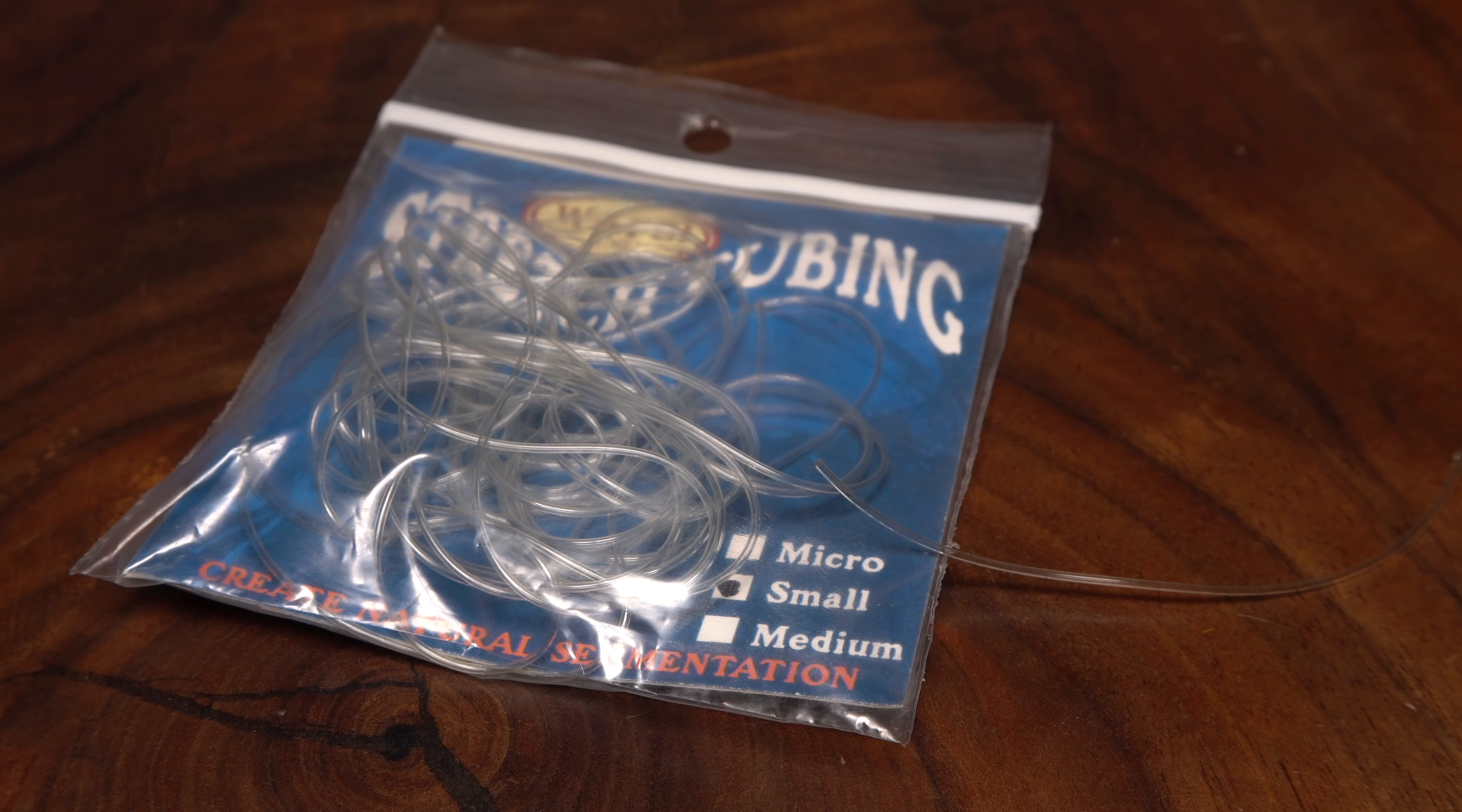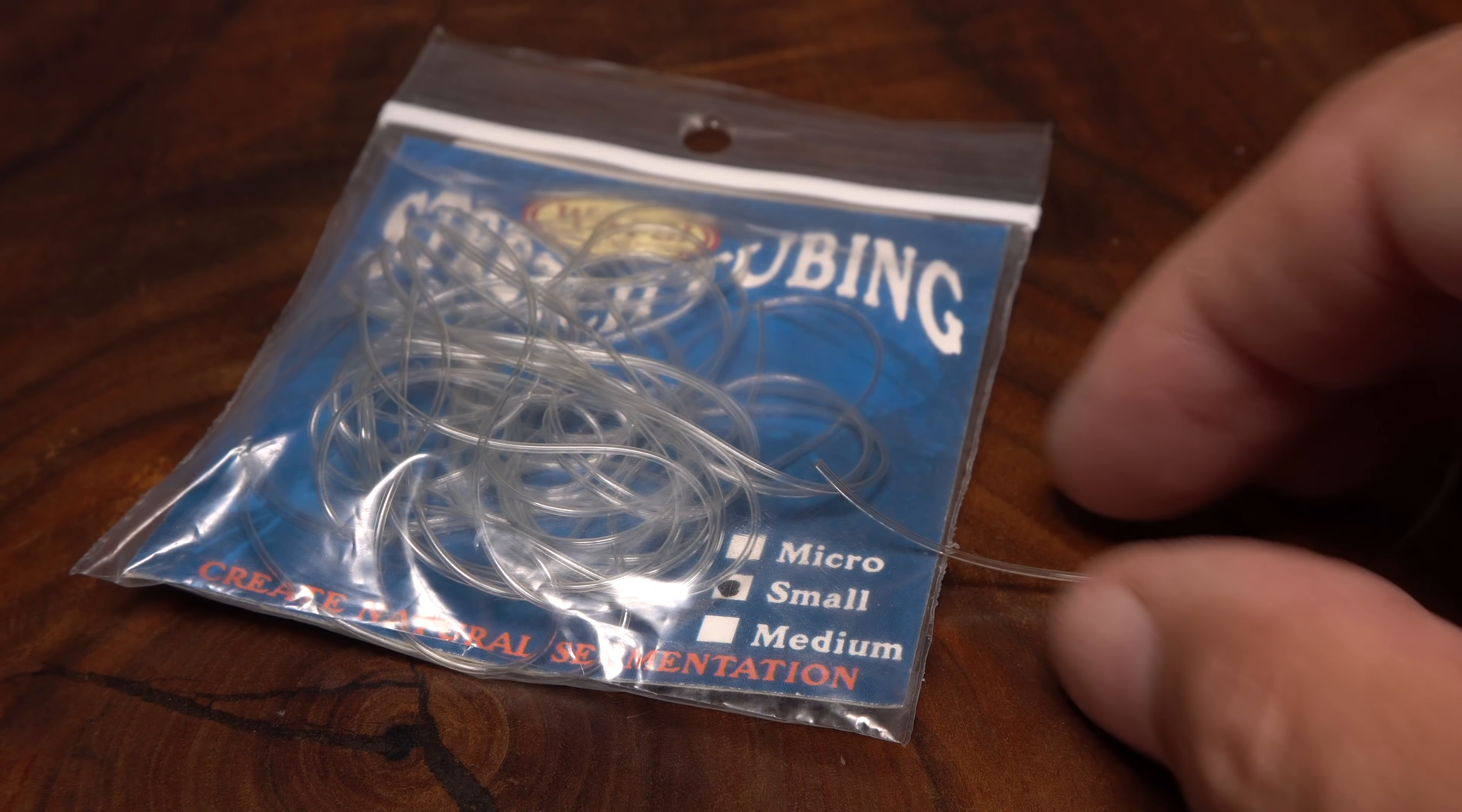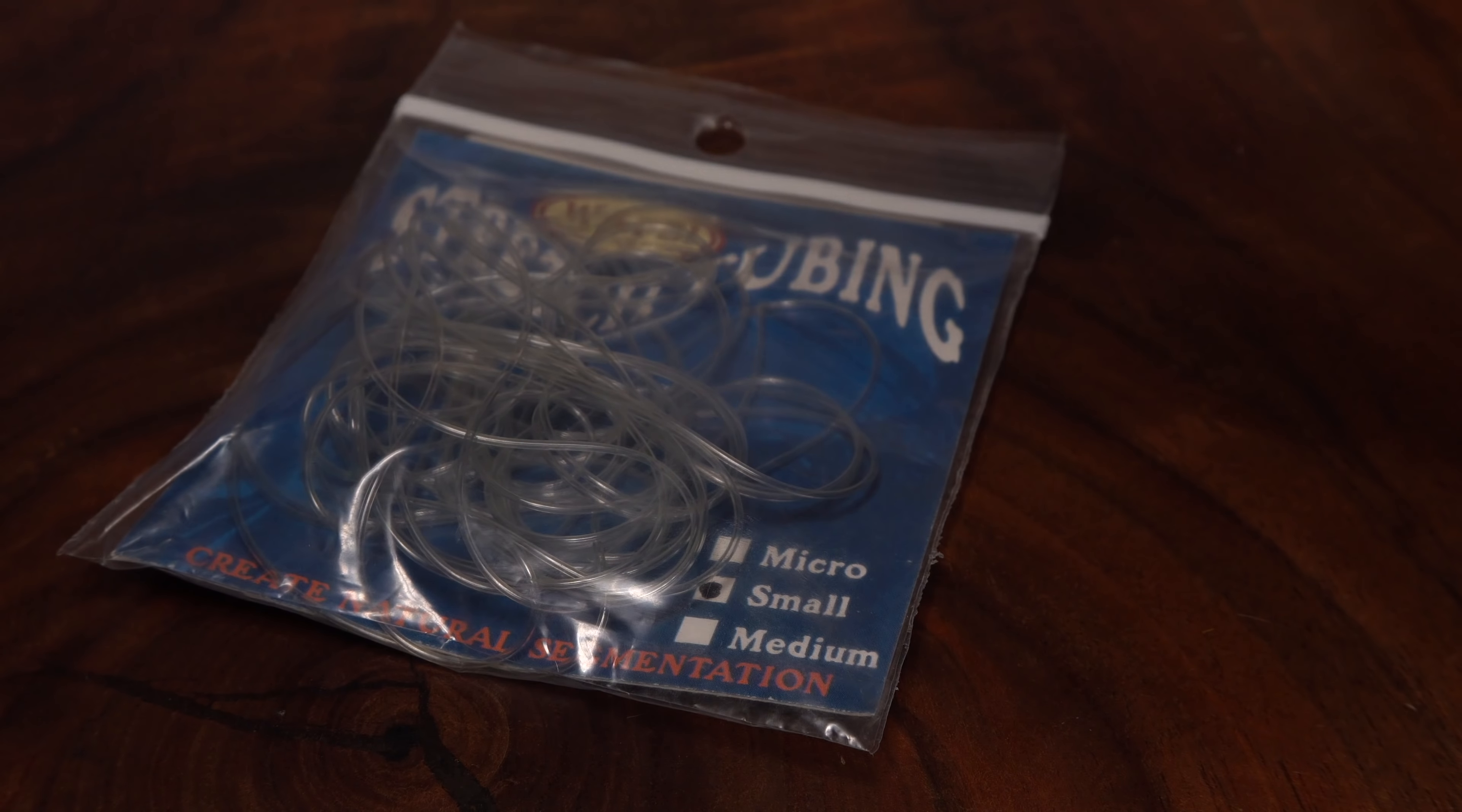For this size 12 Isonychia Parachute, I'm going to use small, clear, stretch tubing, but medium will also work, particularly if you're just starting out.